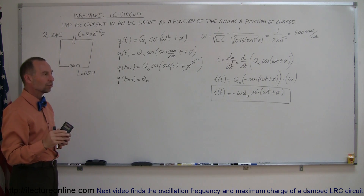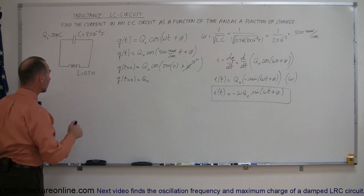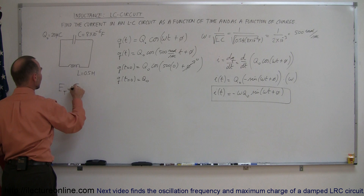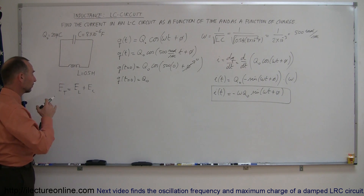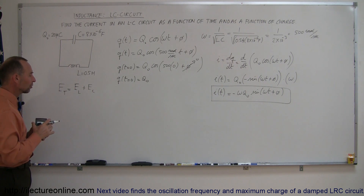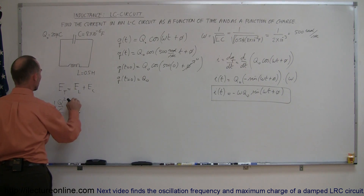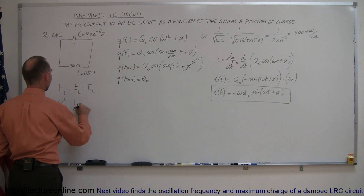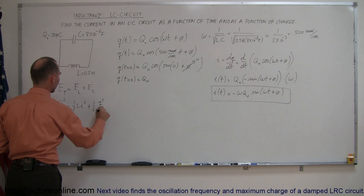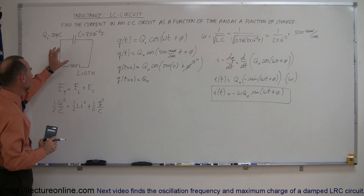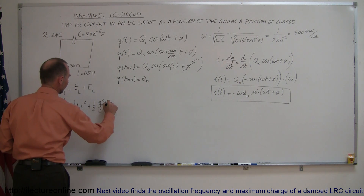We can also find the current as a function of charge on the capacitor, just like we can find the position of an oscillating spring as a function of its displacement from equilibrium. The total energy is equal to the energy on the inductor plus the energy on the capacitor at any point in its oscillation. If the capacitor is completely filled with charge, the energy is one-half Q-squared divided by capacitance, equal to one-half L I-squared plus one-half Q-squared over C, where Q is the total initial charge and little q and I are functions of time.